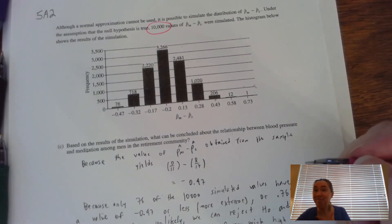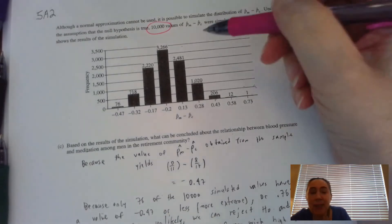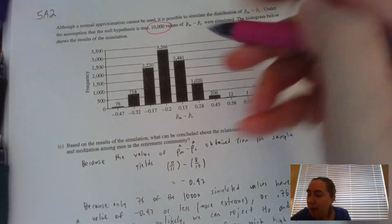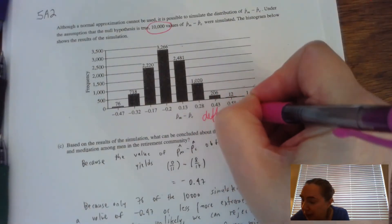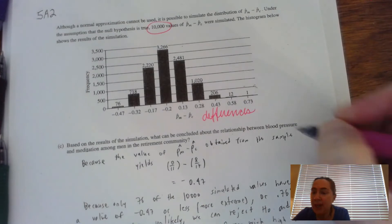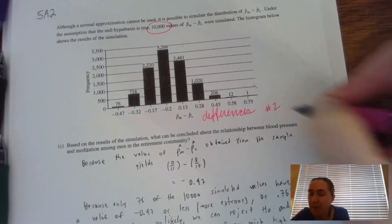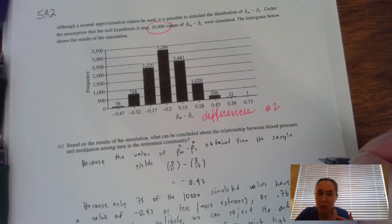So it gives you a bunch of simulated results. 10,000 times. Sorry about that. The simulation was run 10,000 times. And what you're seeing here are the differences.